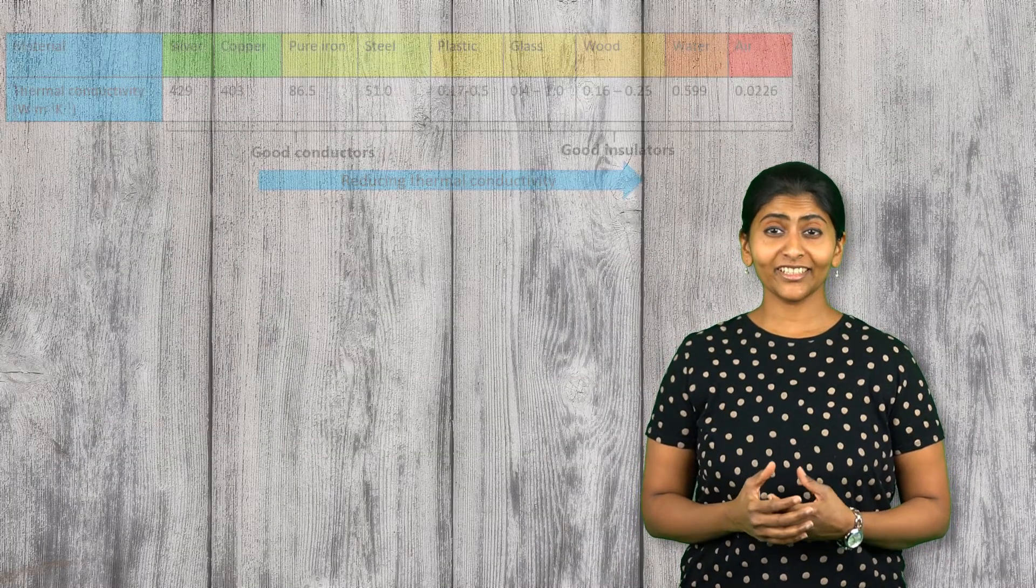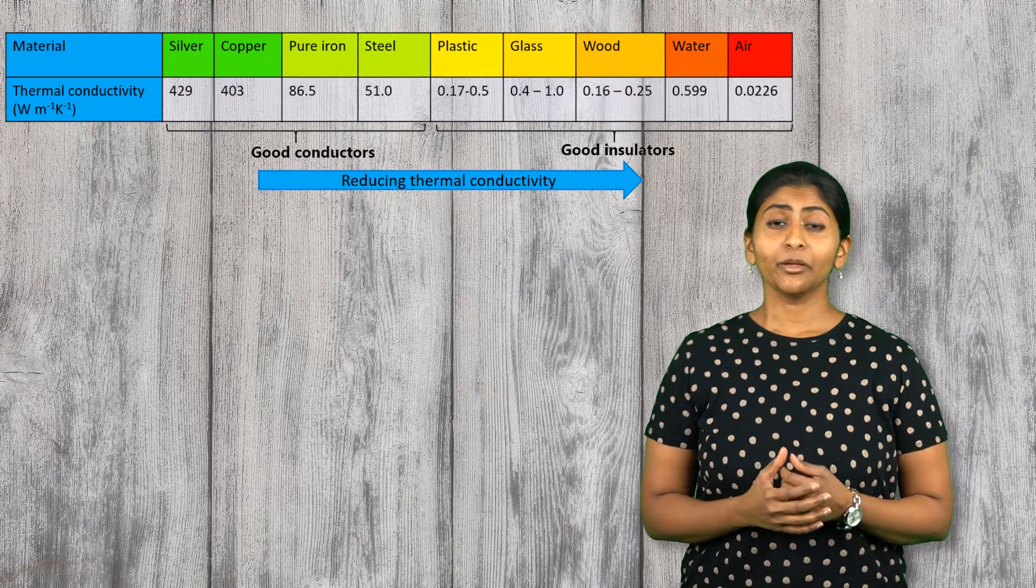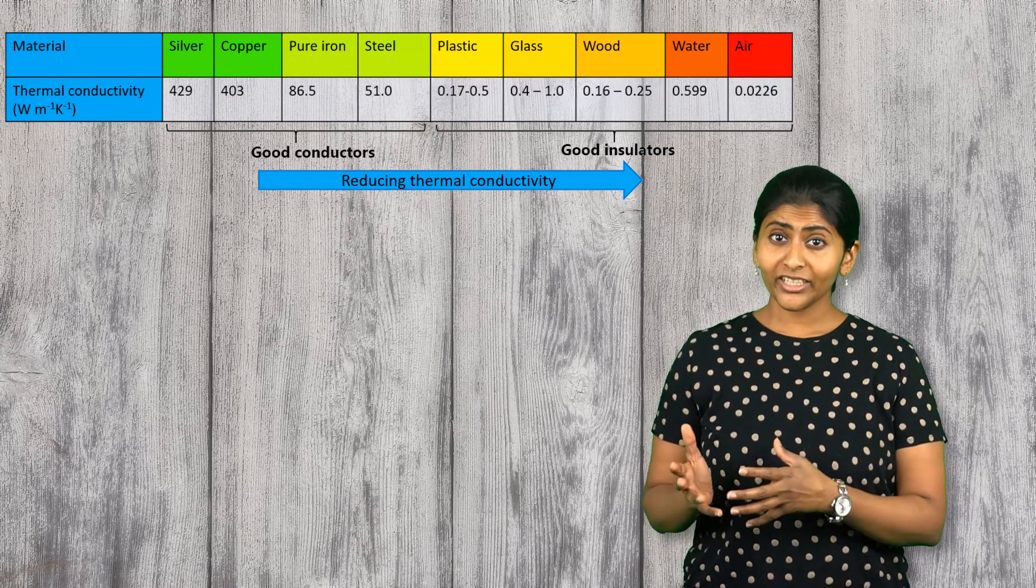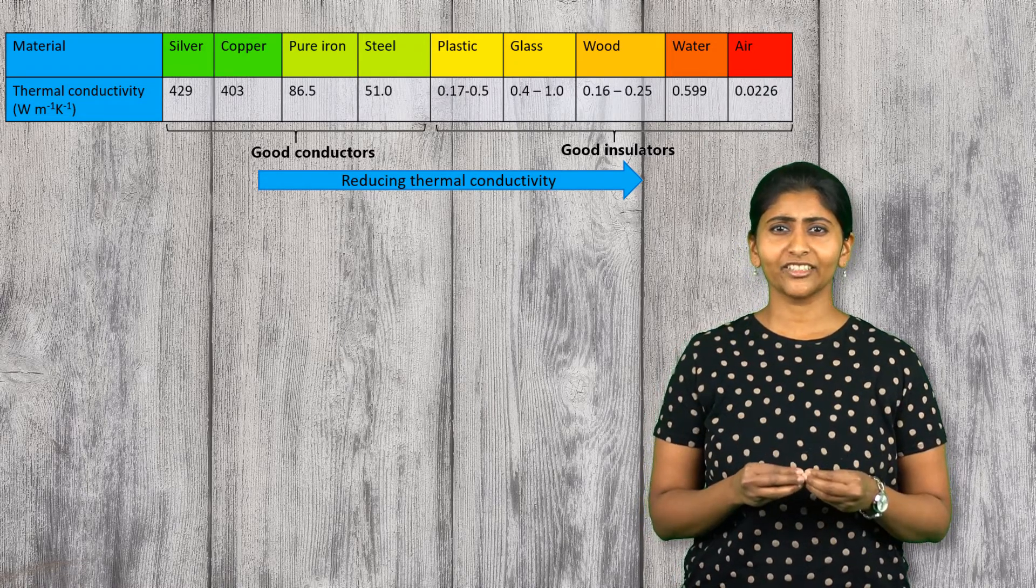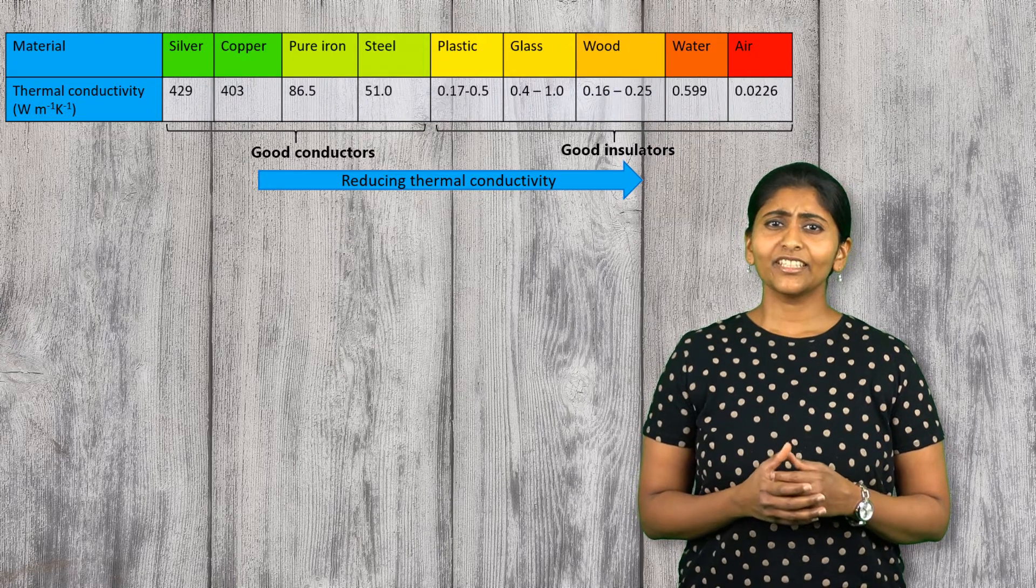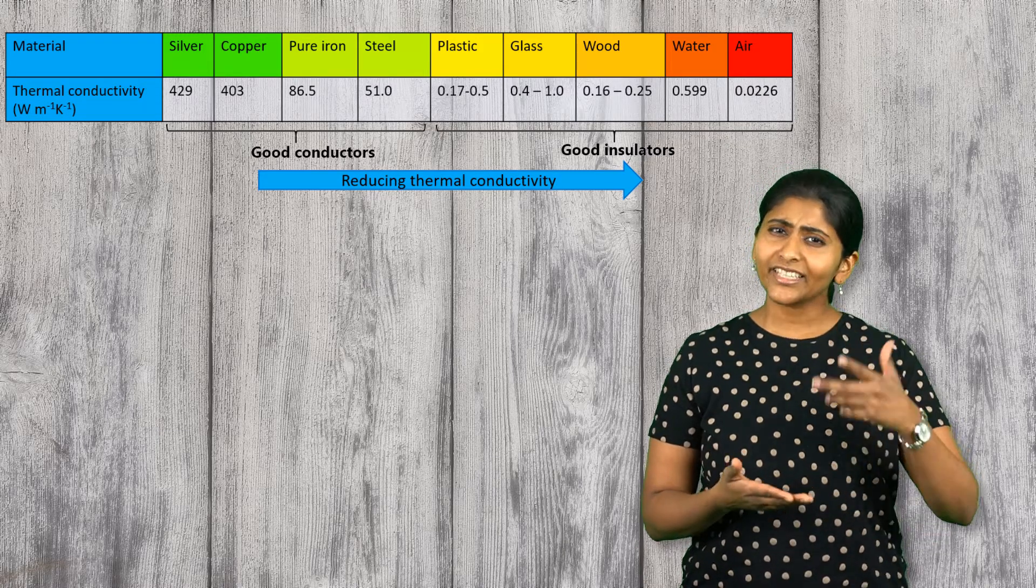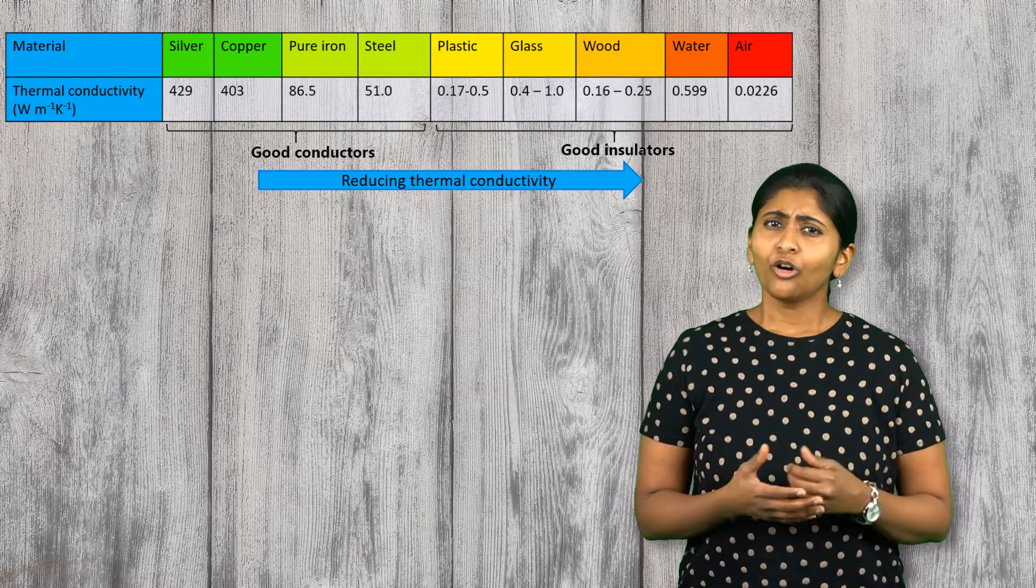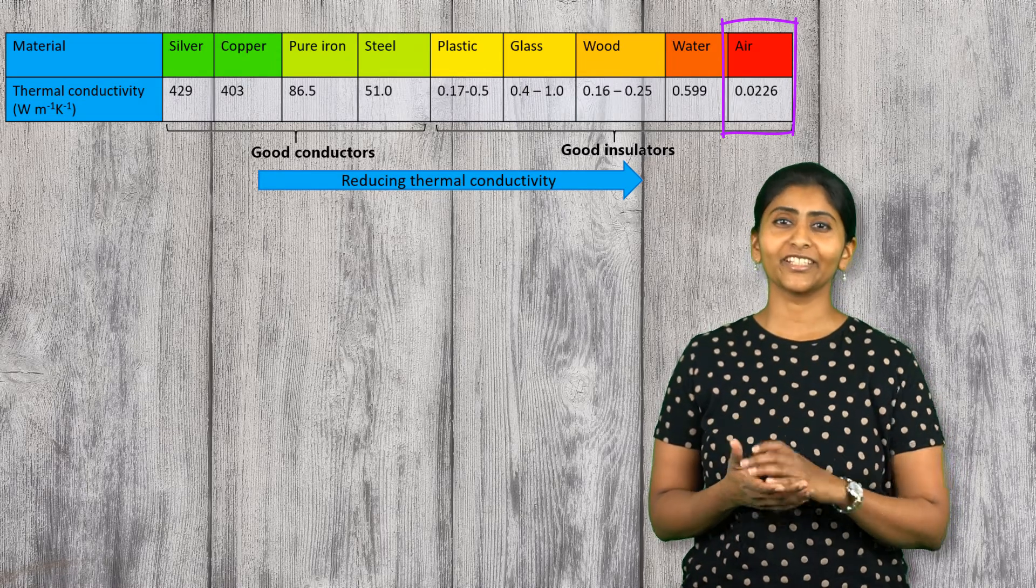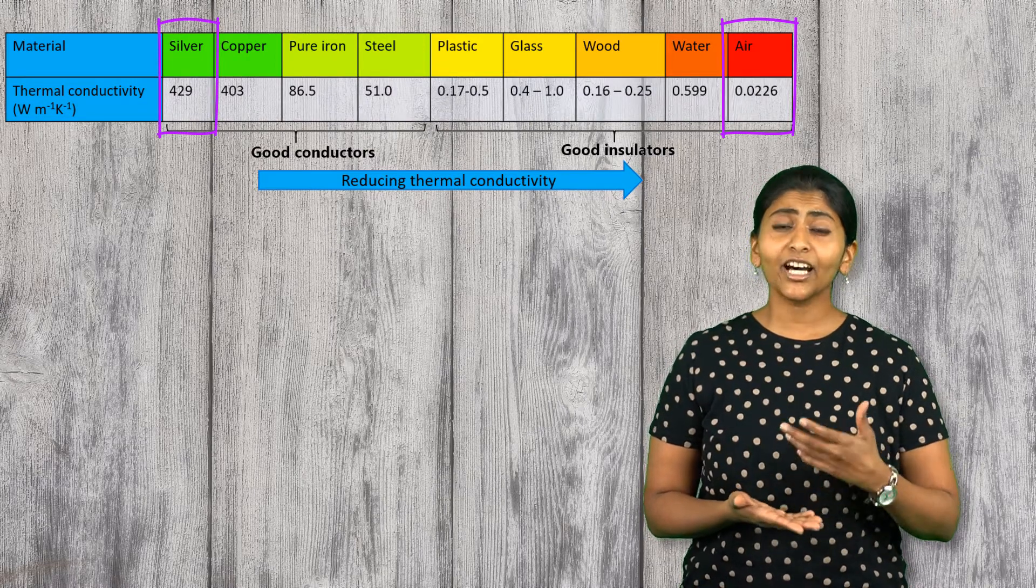The table here shows representative values of thermal conductivity for some materials. Typically, metals are good conductors of heat and have very high thermal conductivity, while non-metals and gases have low thermal conductivity and may act as good insulators of heat. As you can see from this table, thermal conductivity of different materials may differ vastly by several orders of magnitude. For example, air has a thermal conductivity of 0.023 Watt per meter Kelvin, while the thermal conductivity of silver is more than 10,000 times larger.